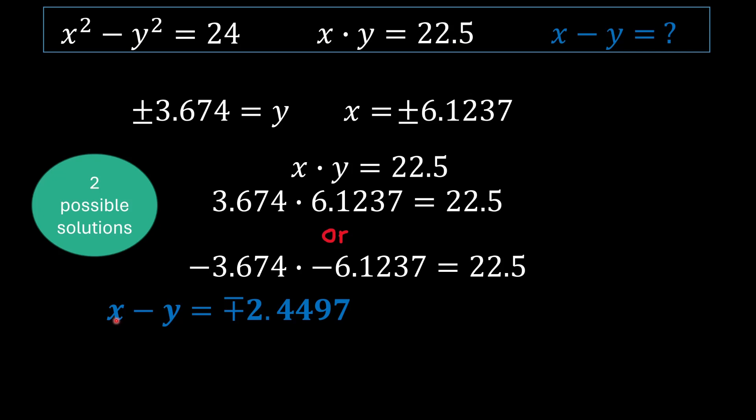And the resulting answer is x minus y could be equal to negative or positive 2.4497. And that's basically it. That's the answer for this problem. I hope you all enjoyed it. If this video has helped you a lot, please leave a like and subscribe. And I'll see you all later.